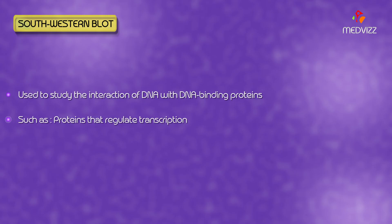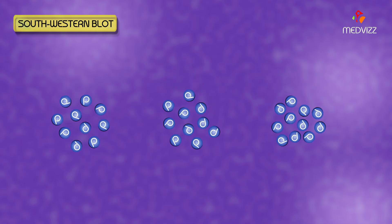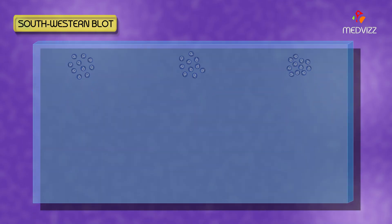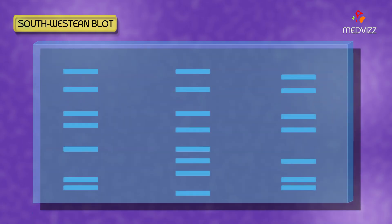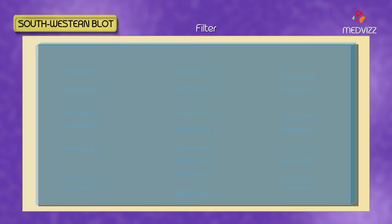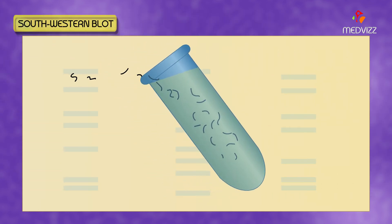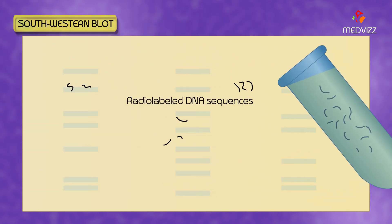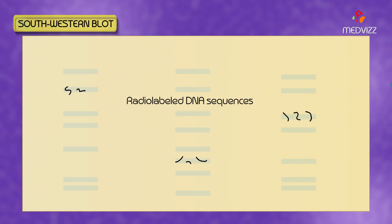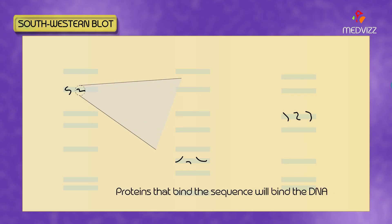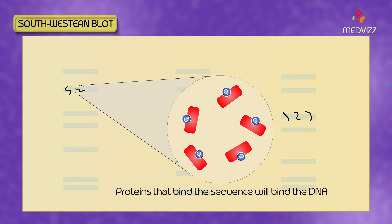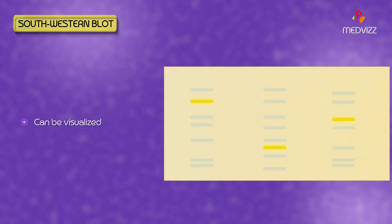Proteins are separated on a gel via electrophoresis, then transferred to a filter. The proteins are exposed to radio-labeled known DNA sequences. The proteins that bind the sequence will bind the DNA, which can then be visualized on a film.